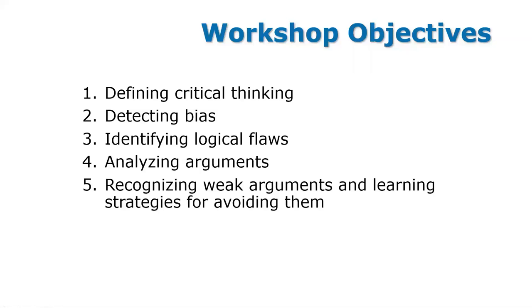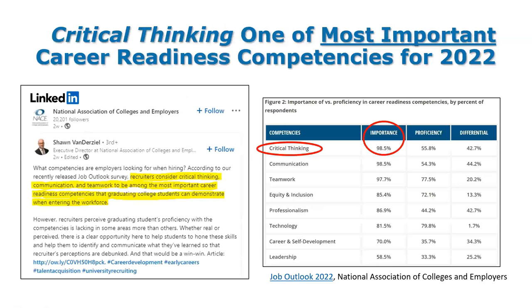Today's objectives include: what is critical thinking, bias, logic, and analyzing arguments. I am not an expert, but as an educator I am very passionate about this topic. According to Sean Van Der Zeele from the National Association of Colleges and Employers, critical thinking ranks number one in importance in what employers are looking for in applicants — communication and teamwork among the most important career readiness competencies.